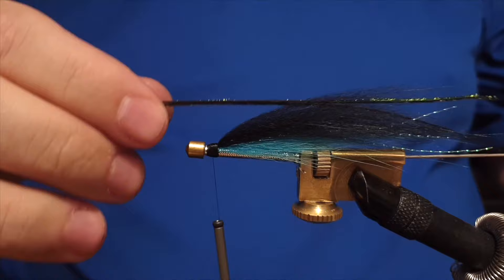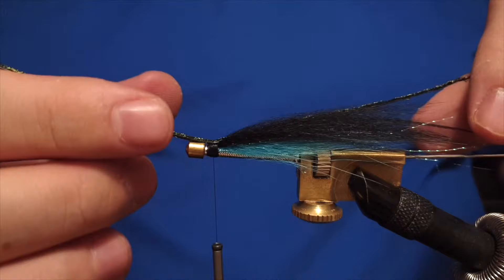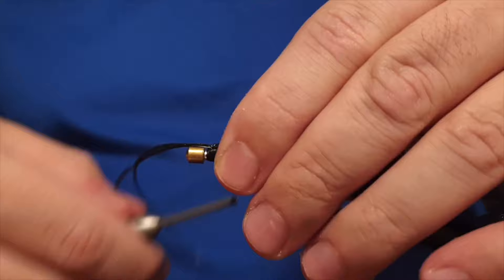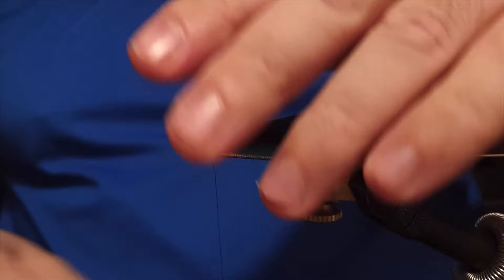The next step would be to place those pico curls over the wing, just like the Sunray Shadow—it's built on that idea. You can tune that in, get a few tight and secure wraps on it, and then trim off the rest of the pico curl.